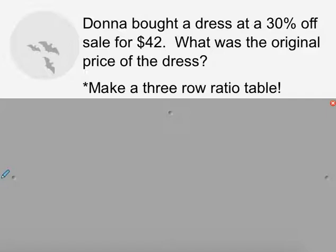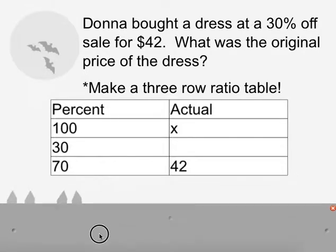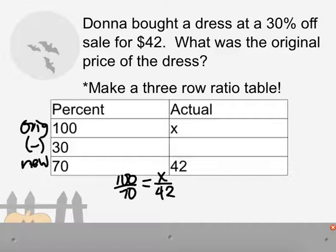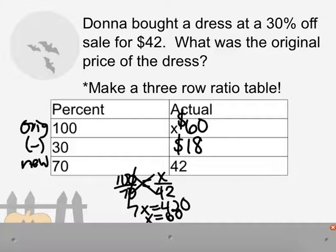Donna bought a dress at a 30% off sale for $42. What's the original price of the dress? We're going to use a three row ratio table for this one. And we say, okay, 100%, I don't know what the actual amount was. That's what I want to find. But there was a 30% discount. And so my new, well, that's 70%. I only had to pay 70% of that original price. So I can set up a proportion and say, well, 100 over 70 is equal to x over 42. And I can simplify a little bit and cross-multiply. So I have 7x is equal to 420. So x is equal to 60. Meaning that my actual price was $60. So I must have saved $18.